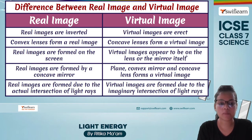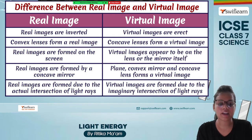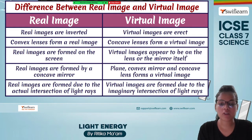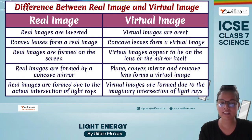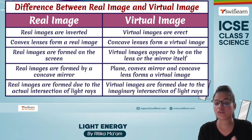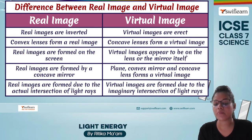Let's see the difference between real and virtual images. Real images are inverted — top becomes bottom and bottom becomes top — while virtual images are erect. A convex lens forms a real image, but a concave lens forms a virtual image. Real images can actually be formed on a screen, but virtual images appear to be on the lens or mirror itself. Real images are formed by a concave mirror or convex lens; virtual images are formed by a plane mirror, convex mirror, or concave lens. Real images are formed due to actual intersection of light rays, while virtual images are formed due to imaginary intersection.